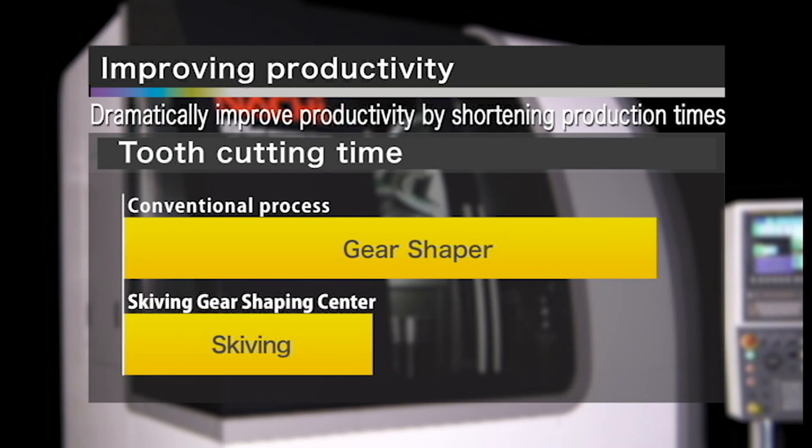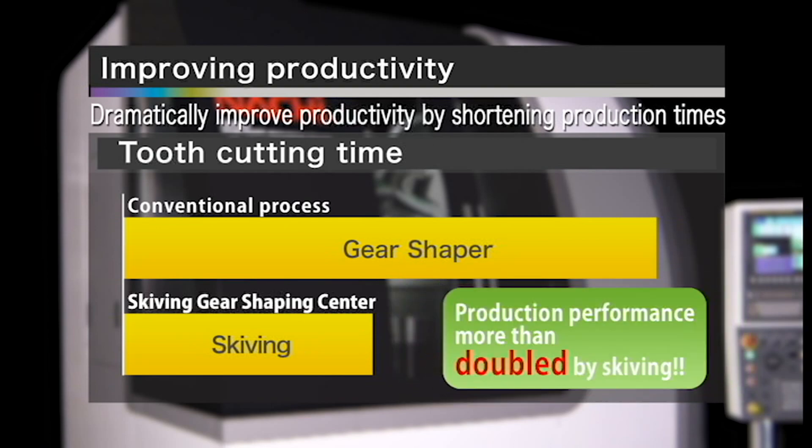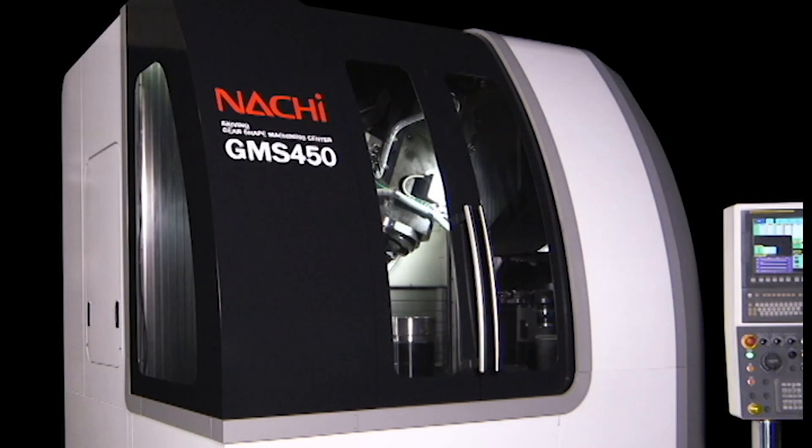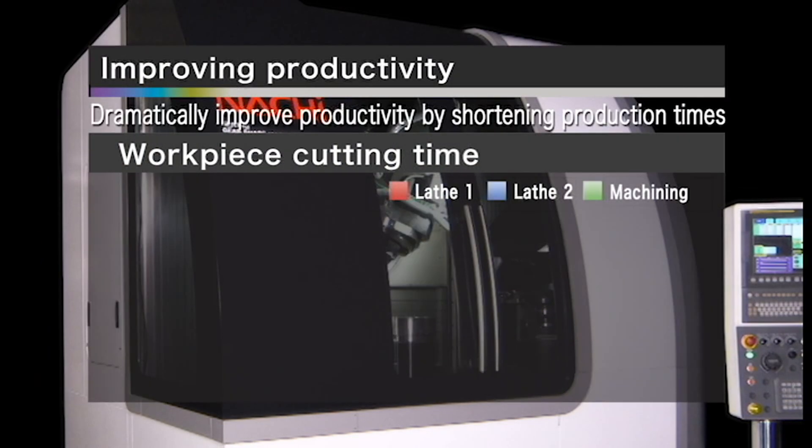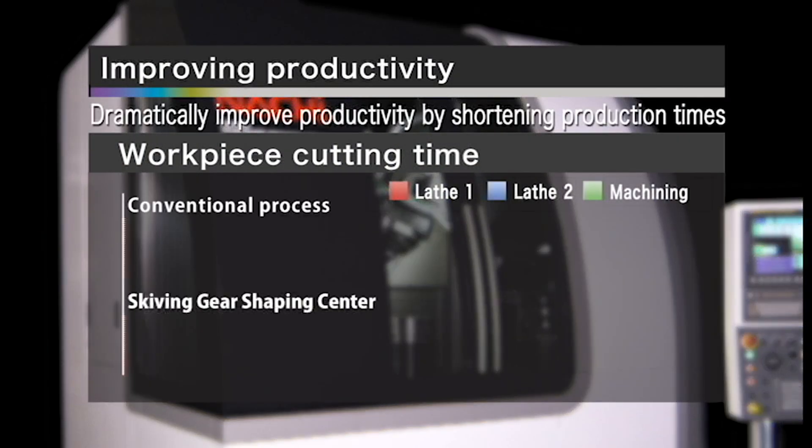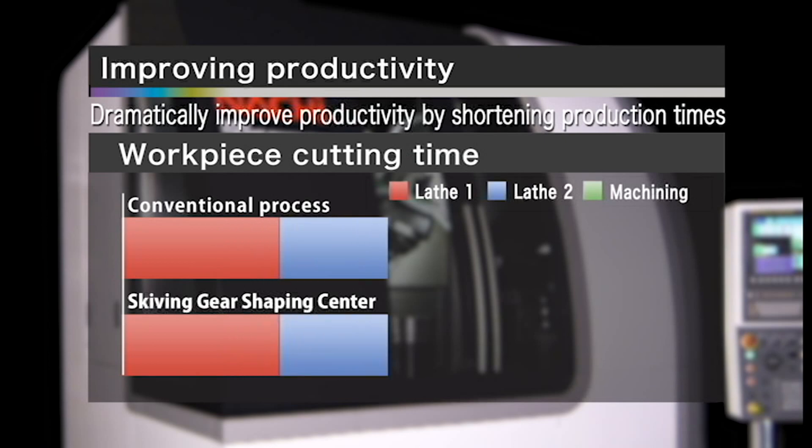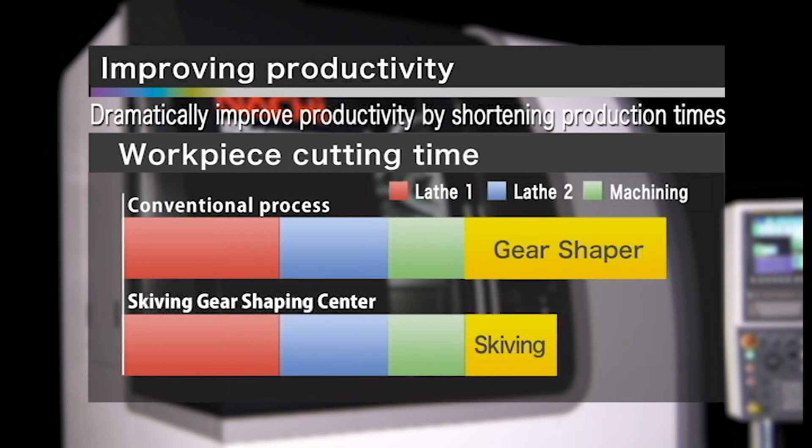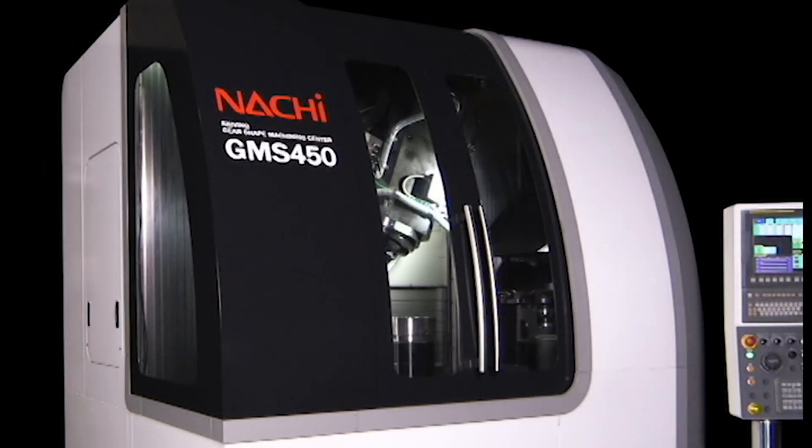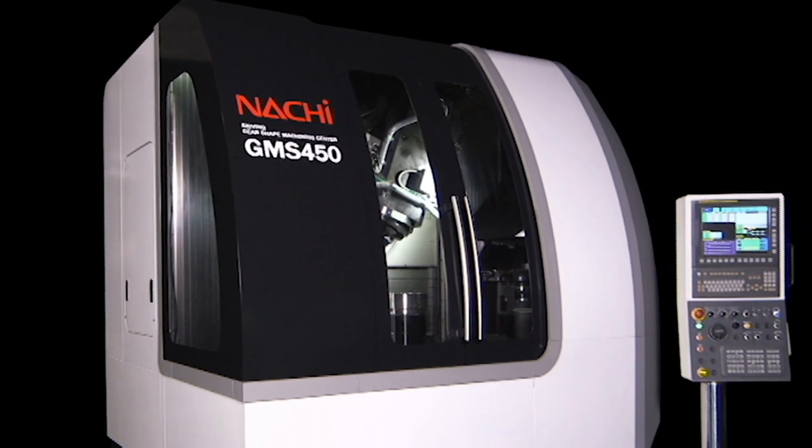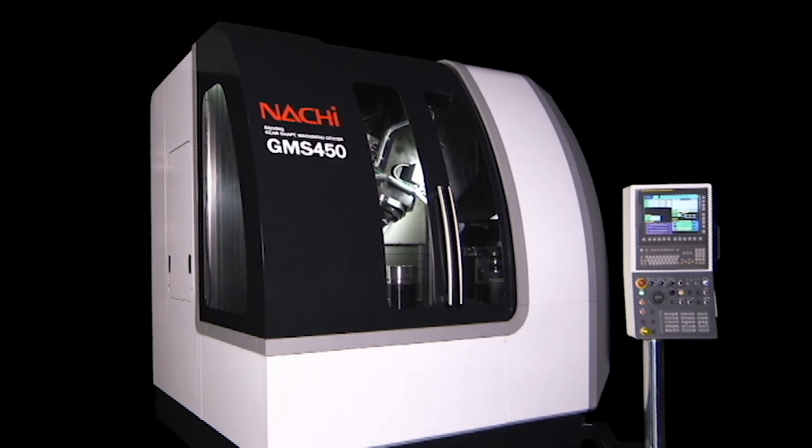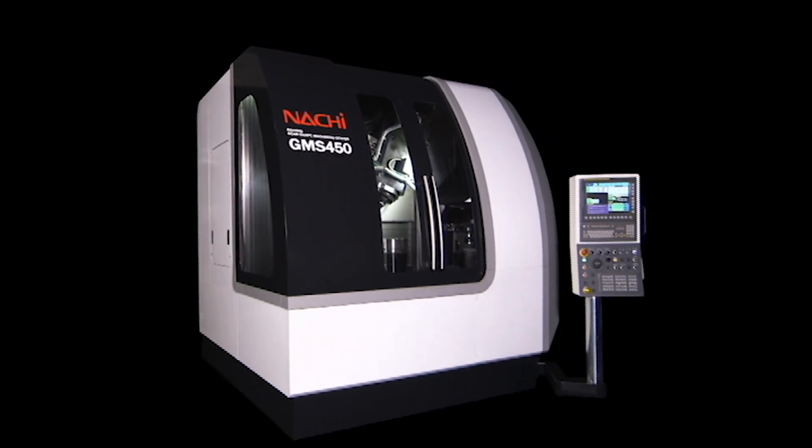Plus your productivity will greatly improve by eliminating the time for setting workpieces and changing tools, and by saving jobs to multi-function processing. The GMS450 is an excellent skiving machine for small odd variable workpiece production up to mid-range volume production.